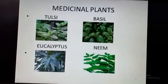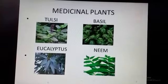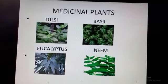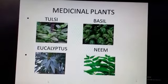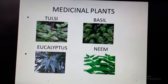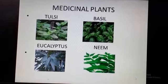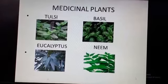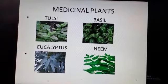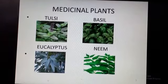The next category is medicinal plants. Some plants have medicinal values. As you can see: tulsi, basil, eucalyptus, neem. The leaves of the tulsi plant and eucalyptus tree are good for cough and cold.